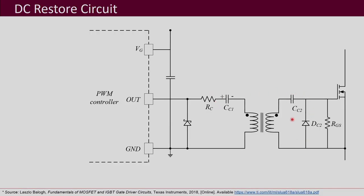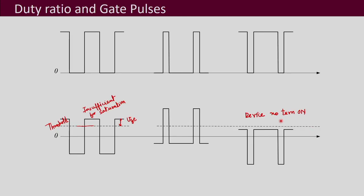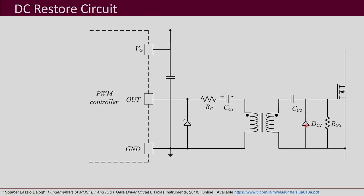This is a problem when using a capacitance to remove DC and pass AC to the transformer. People have solved it using what is called a DC restore circuit. On the output side, they add a capacitor and a diode arrangement that restores the gate pulse back to its original shape, eliminating the limitations caused by the duty ratio value.